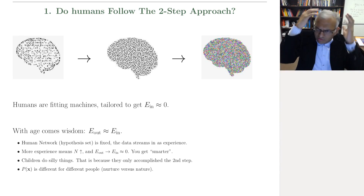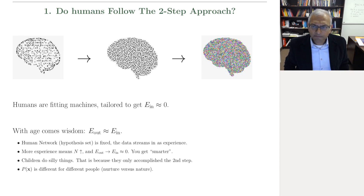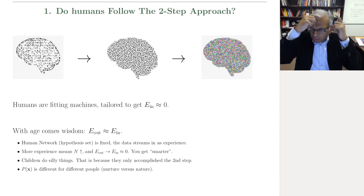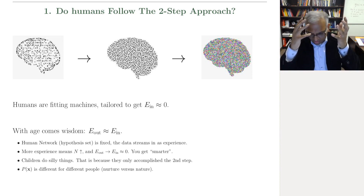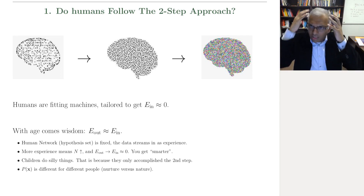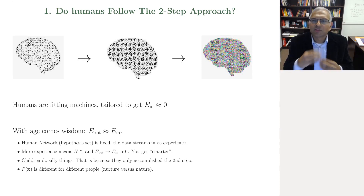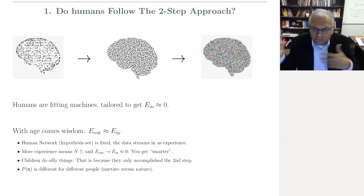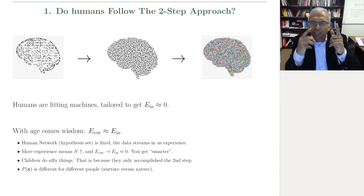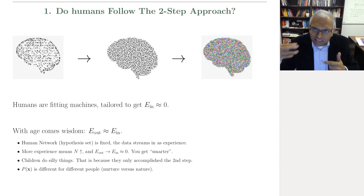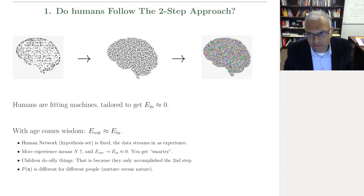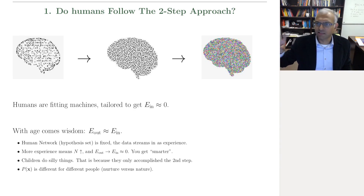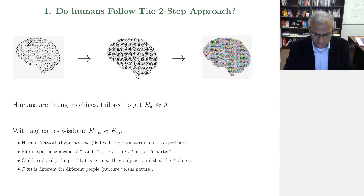Think of it this way: when you're born, you have this sophisticated neural network in your brain. As you grow older, you change the synapses — the synapse weights — you reconfigure here and there. Ultimately, your neural network stays fixed. You have this huge, complicated hypothesis set which allows you to represent reality in a variety of ways, and you're gradually picking one of those ways as you get more and more experience. You're constantly maintaining E_in approximately equal to zero.